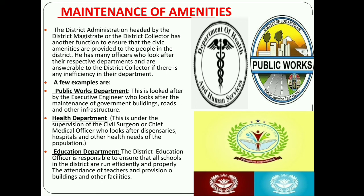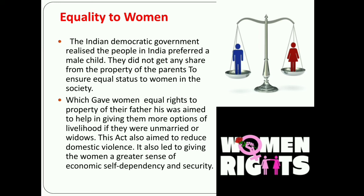The Indian democratic government realized that people in India preferred a male child, and women were discriminated against and left to fend for themselves in crisis. They did not get any share from the property of their parents. To ensure equal status to women in society, the law of inheritance was amended in 2005, which gave women equal rights in the property of their father. This was aimed at giving them more options for livelihood whether married or widowed. This act also aimed to reduce domestic violence and gave women a greater sense of economic self-dependency and security.